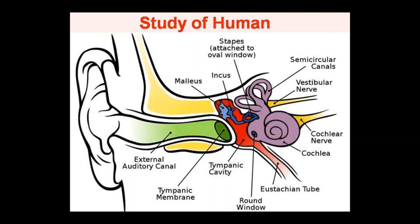The three bones that make up the ossicles are: malleus, incus, and stapes. In the diagram above, these are labeled. The stapes has a bracket indicating it is attached to the oval window, because it is connected to the oval window.